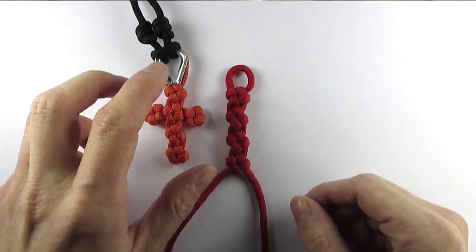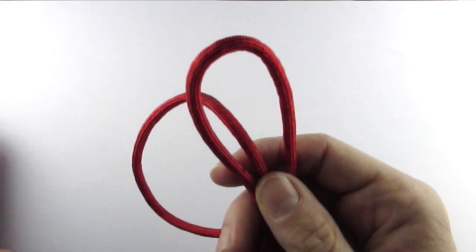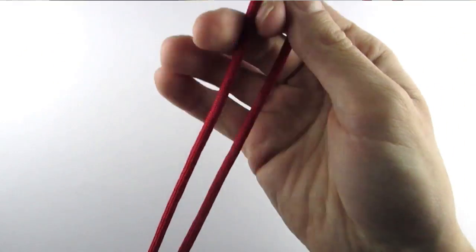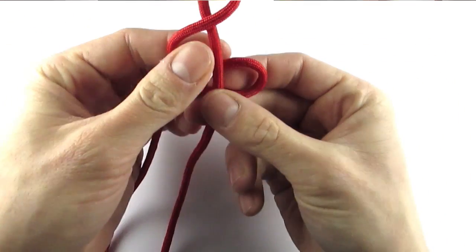We now need to make the horizontal end as well. We're going to take a smaller piece of paracord and we're going to fold it in half. And again we're going to make the cross knot at the top.